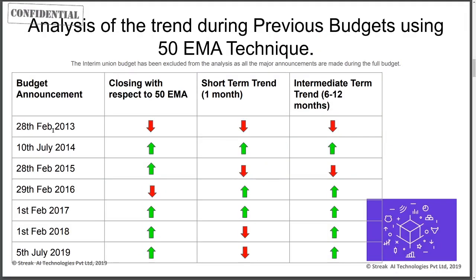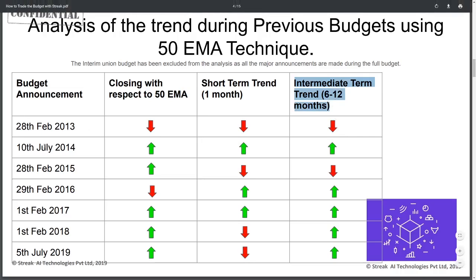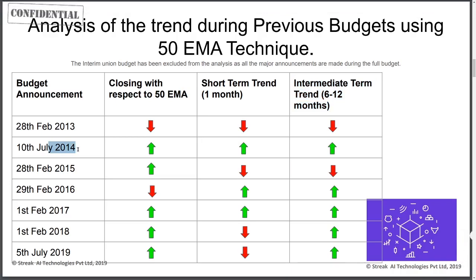Historically, we have taken data from 2013 to 2019. In February 2013, the budget was announced and the closing price that day was below the 50-day EMA. The trend continued for the short term — after one month, price fell — and after six to twelve months, price was also down. In July 2014, the closing price was higher than the 50-day moving average, and both the short-term and intermediate trends were bullish. In February 2015, the price closed above the 50-day EMA, but the short-term and long-term trends became bearish. In 2016, the day's closing was below the 50-day EMA, but both the short-term and intermediate trends were bullish. The 2017 analysis showed bullish for both short-term and intermediate. In February 2018, price closed above, with a bearish short-term trend but bullish intermediate. In 2019, even though the close was above the 50-day EMA, the short-term trend was bearish, then became bullish. We are deriving probabilistic, statistical-significance analysis to understand how to devise strategies that work on either the bullish or bearish side.